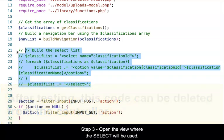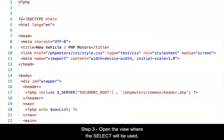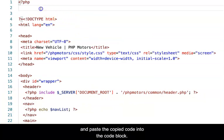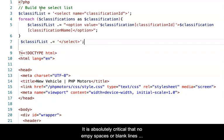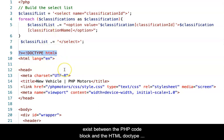Step 3: open the view where the select will be used, create a PHP code block at the top of the view, and paste the copied code into the code block. In this video, it is in an add vehicle view. It is absolutely critical that no empty spaces or blank lines exist between the PHP code block and the HTML doctype declaration. If any spaces exist, an error will occur.